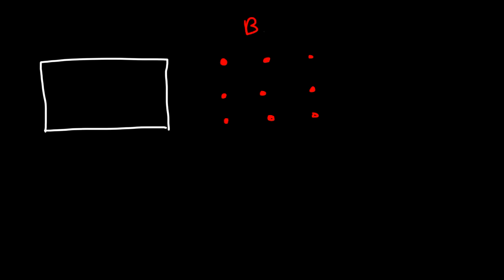Let's start with an example. Let's say we have this coil of wire, and to the right we have a magnetic field that is constant and pointed out of the page. Now we're going to move this coil to the right, so eventually it's going to be exposed to this magnetic field. The magnetic field entering the center of the coil will increase as we move to the right, and therefore the magnetic flux will increase.